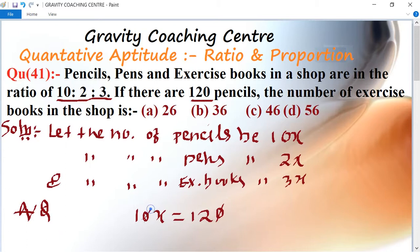So x equals 12. Now we need to find exercise books, which is 3x equals 3 times 12 equals 36. So option B is the right answer.